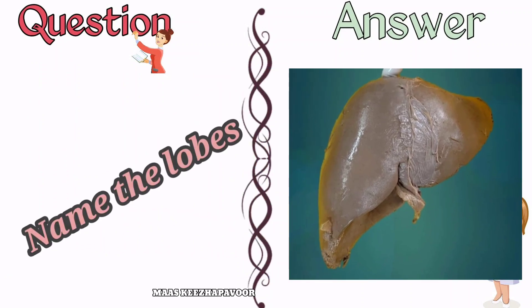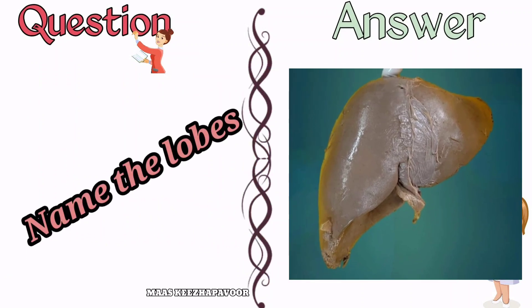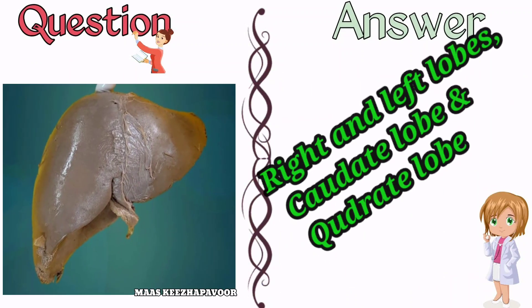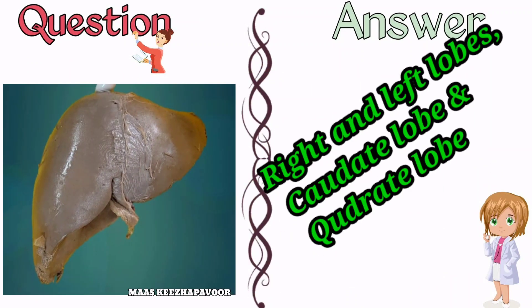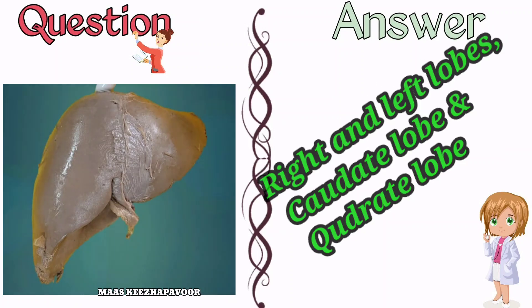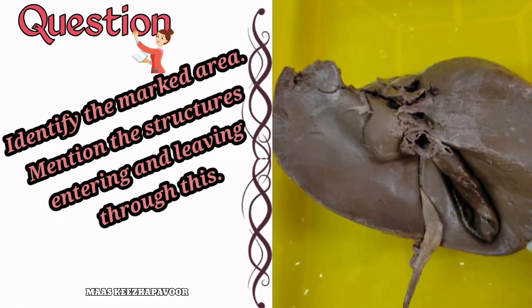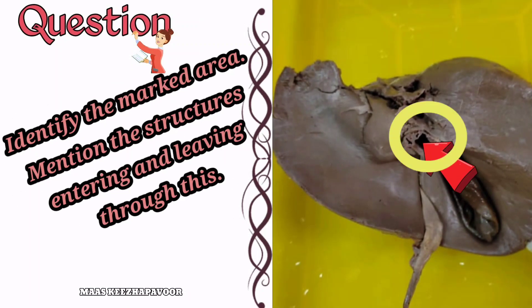Name the lobes present in it. The lobes are the right lobe, left lobe, caudate lobe, and quadrate lobe. Identify the marked area.